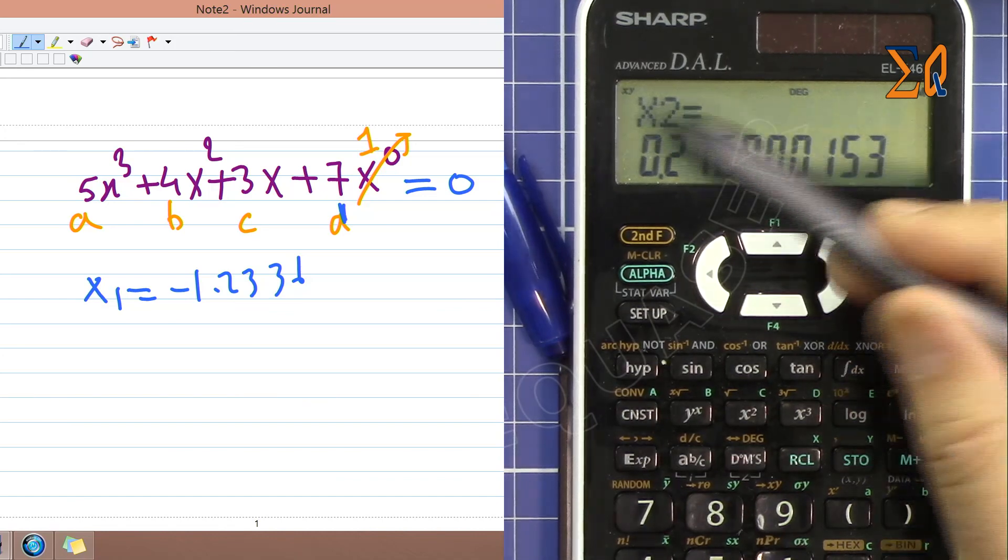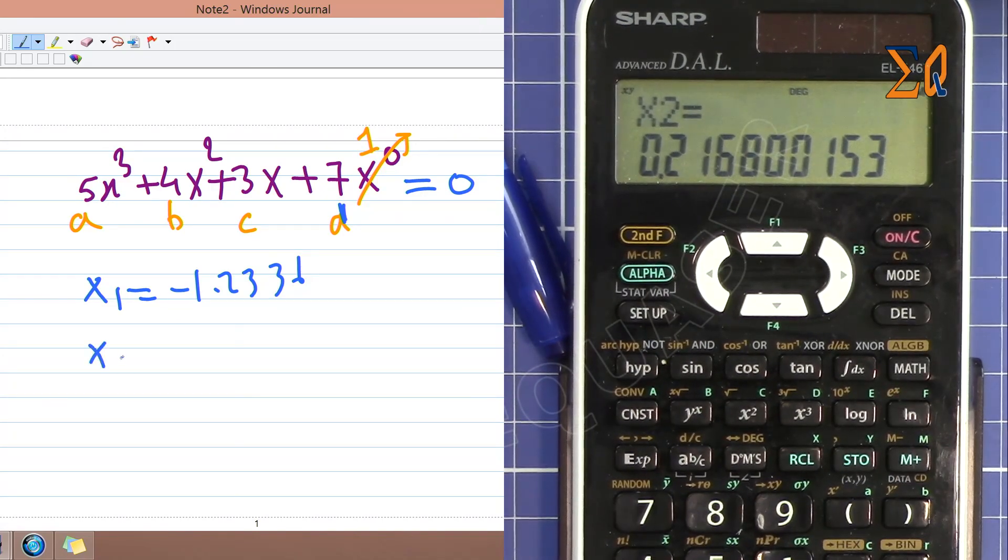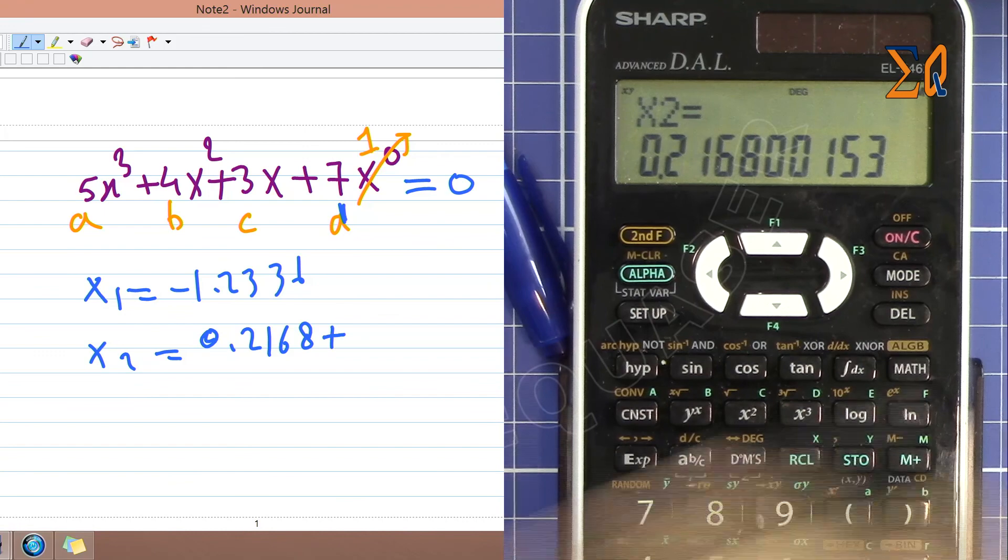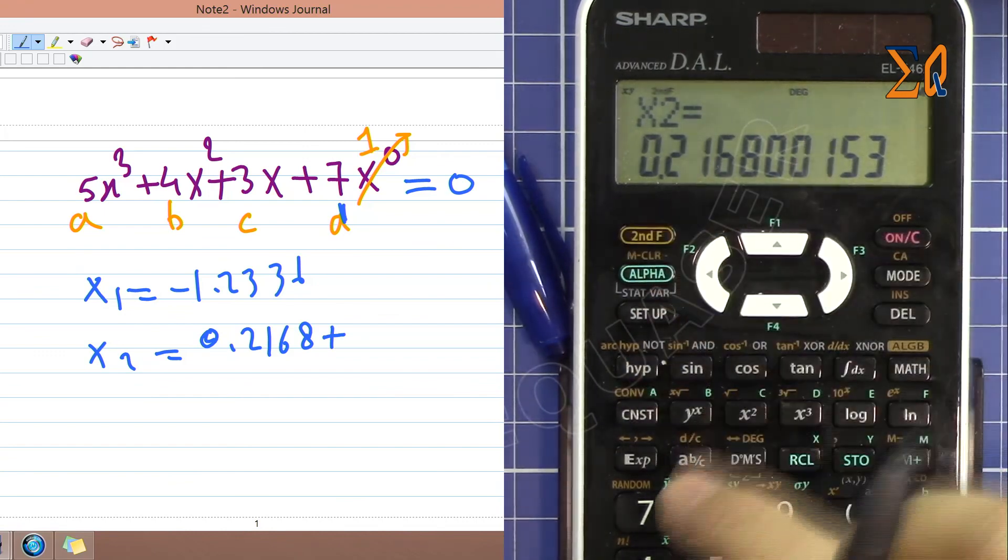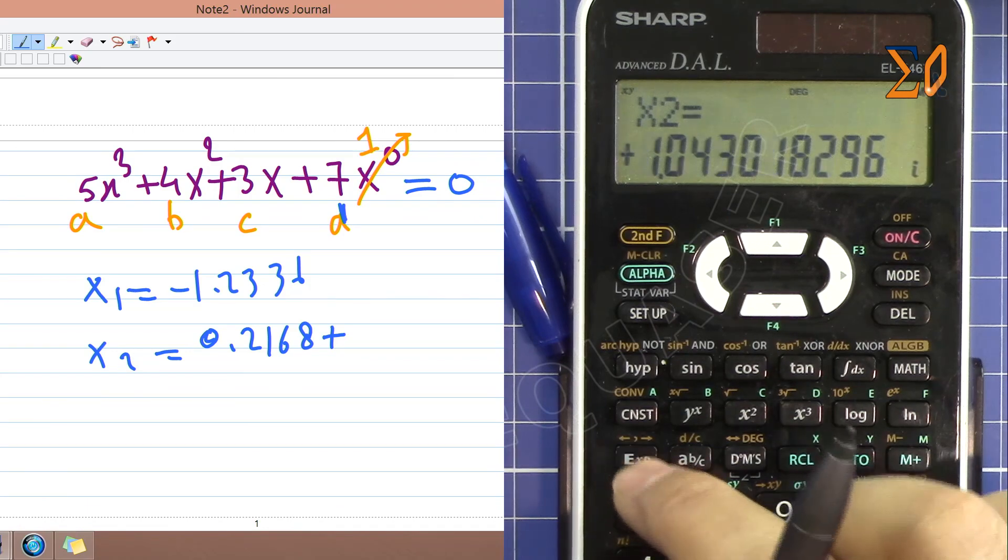When I press equal sign, pay attention - X and Y appeared. So now x₂ is 0.2168, plus or minus. So press Shift, second function, and then this EXP, and you see plus and then i here, 1.043i.